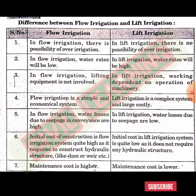In flow irrigation, there is a possibility of over-irrigation. As we know, in flow irrigation the water flows horizontally, so the chances of over-irrigation are higher. In case of lift irrigation, there is no possibility of over-irrigation because it involves upward movement of water.